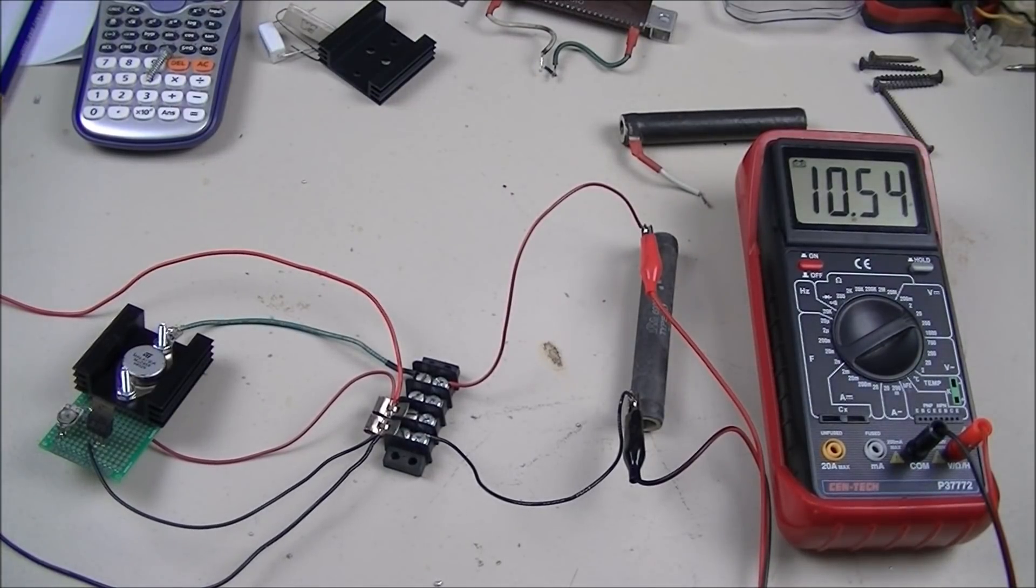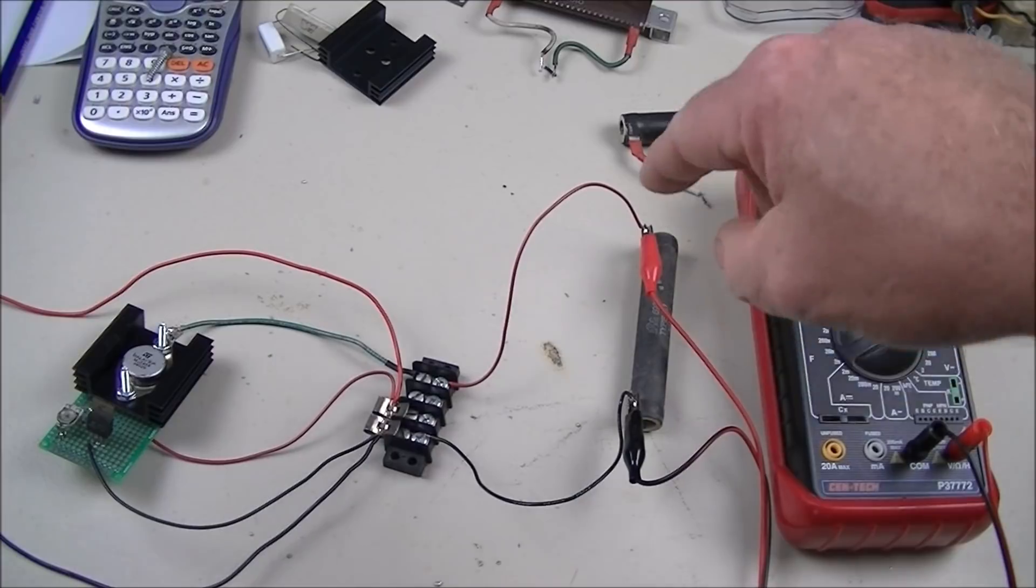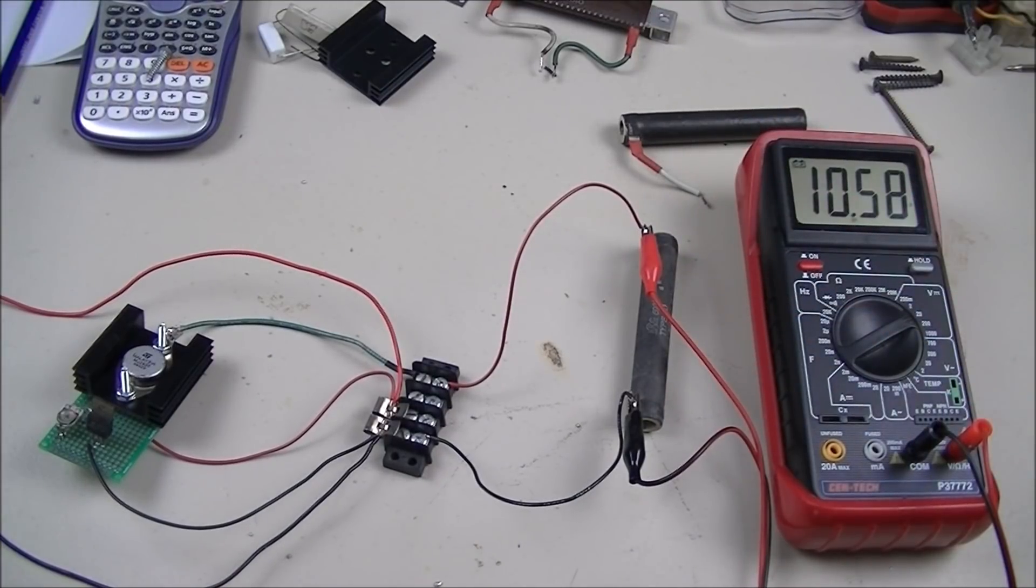It's already set for about 1 amp. This resistor does not measure out to be exactly 10 ohms. It's closer to about 11 ohms, which is why you see this.